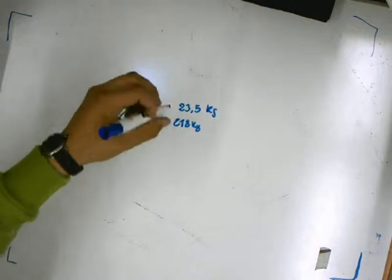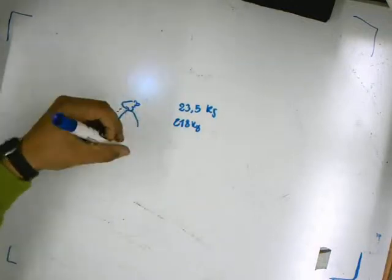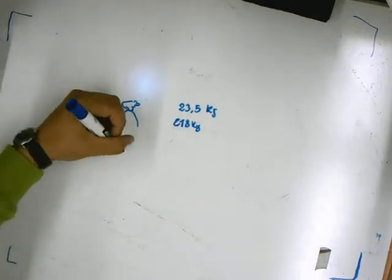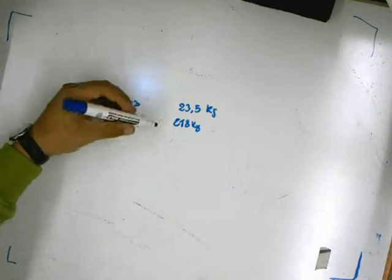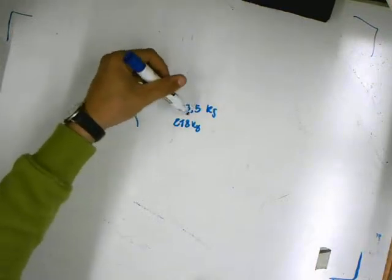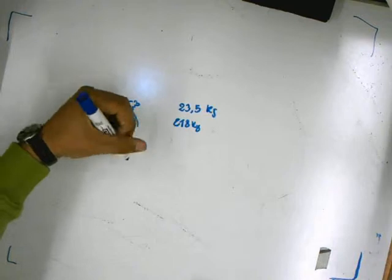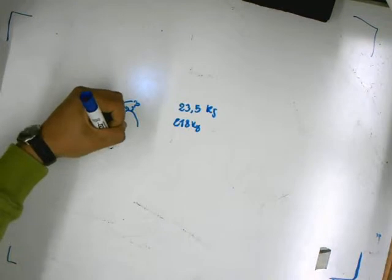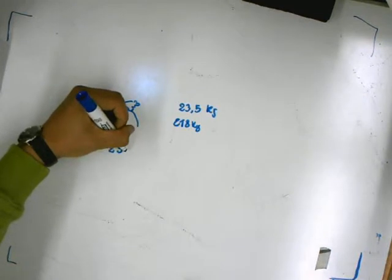So we transform 23.5 kilojoules, which is 23,500 joules.